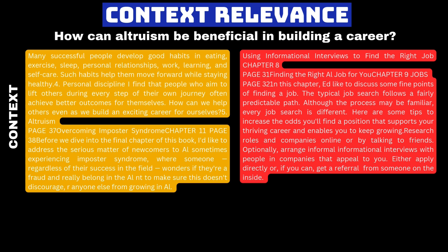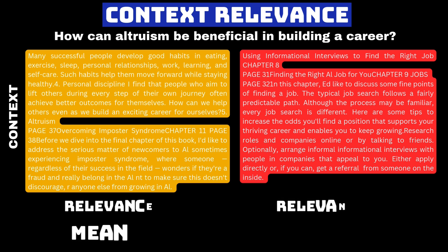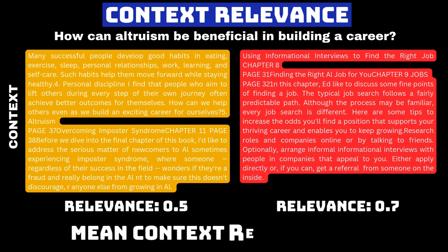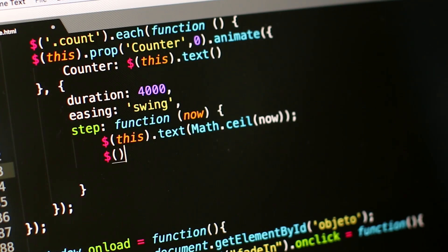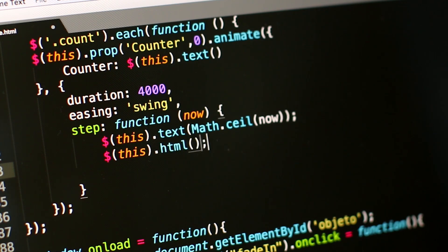Here is a sample example of how context relevance evaluation is performed. We assign a score between 0 and 1 to each chunk of context based on its relevancy to the query — a high score means more relevant. We can write feedback functions that generate these scores based on the LLM app's input, outputs, and intermediate results.